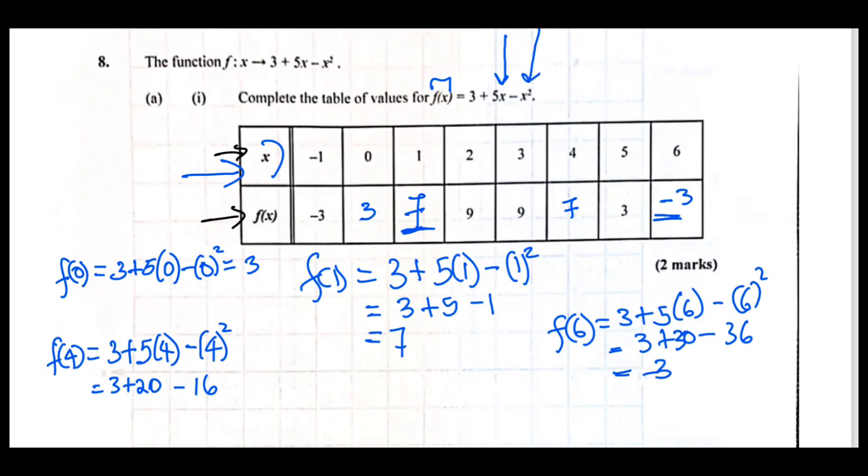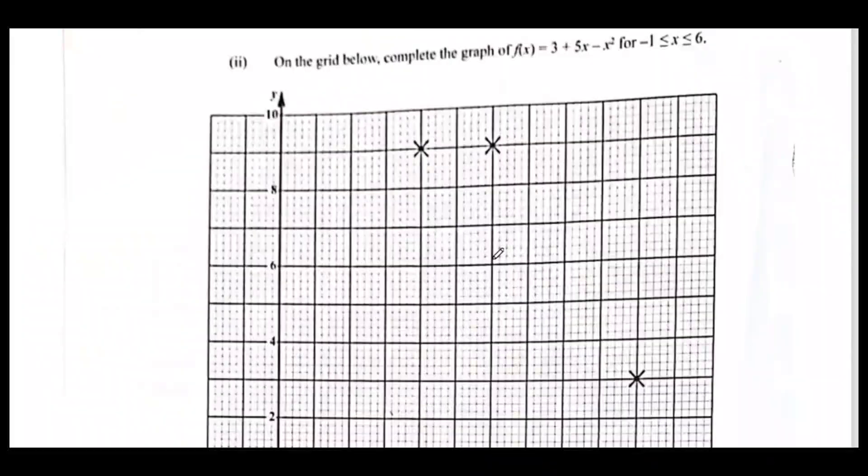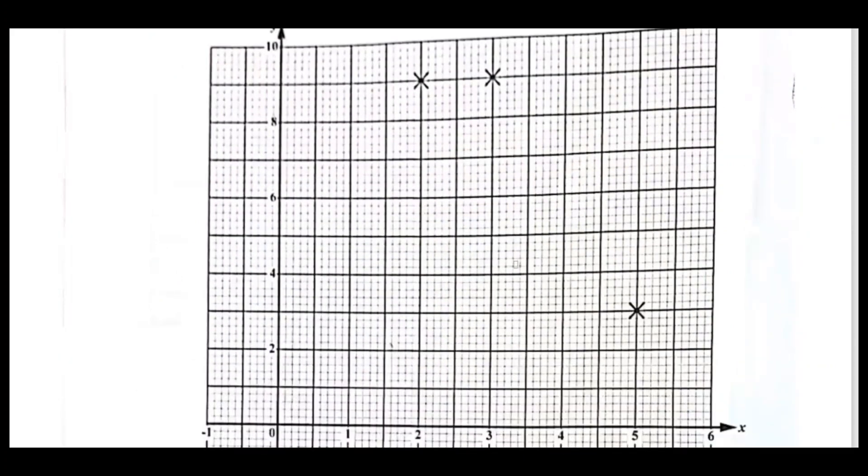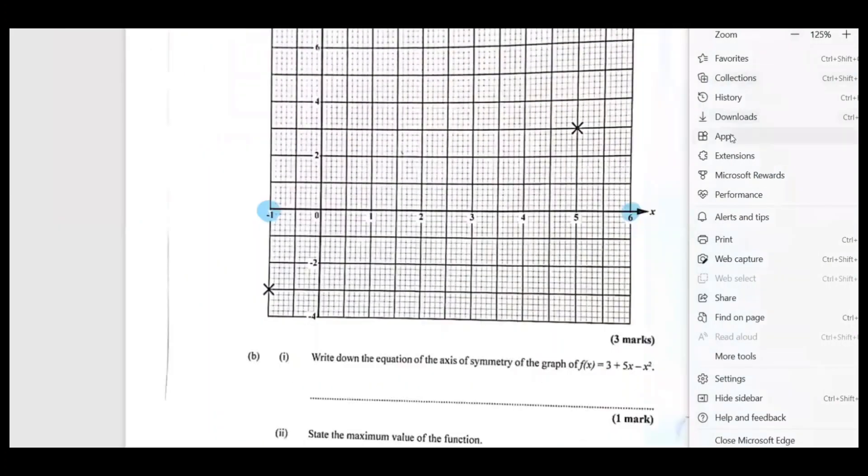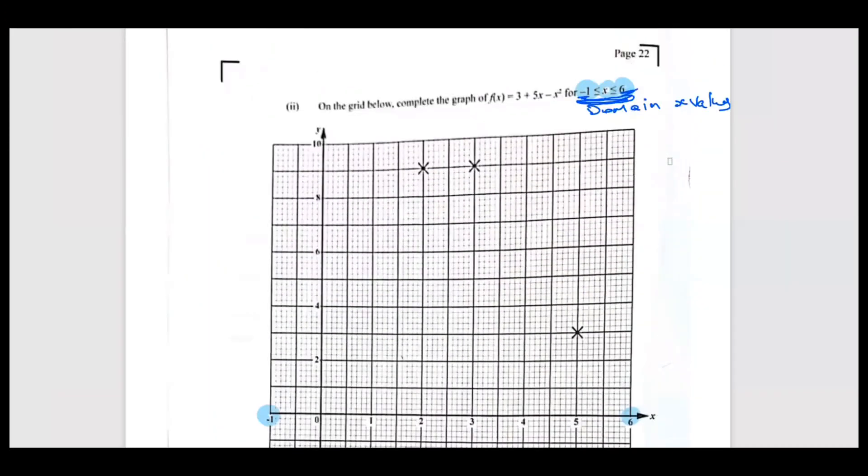You get two marks for that. On the grid, complete the graph of f(x) = 3 + 5x - x² where x is less than or equal to 6 and greater than or equal to negative 1. Look at the graph, you will see the same thing - it starts at negative 1 on the graph and ends at 6. I'm making the graph a little bit smaller so you could plot it right here.